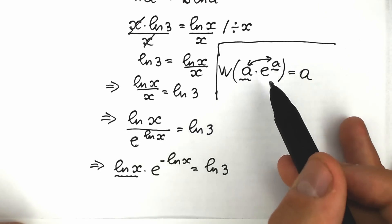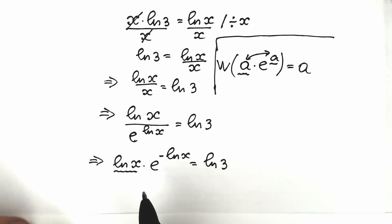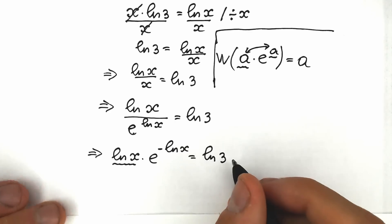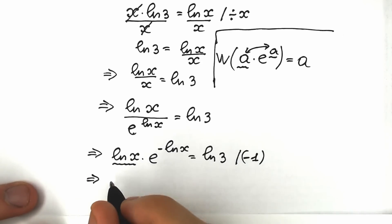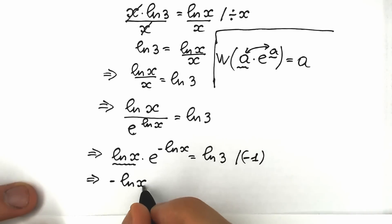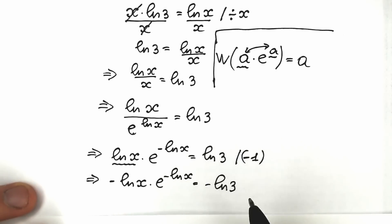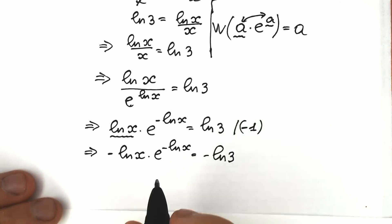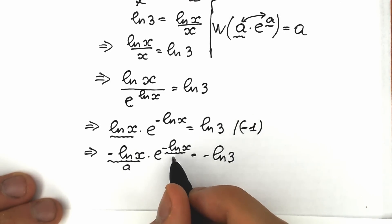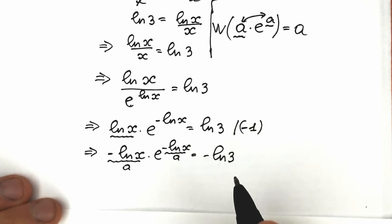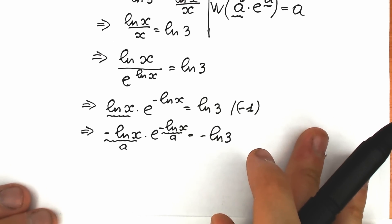According to the Lambert W function definition, we need a and a — the same expression. So let's multiply both sides by minus 1. As a result we have minus natural log x times e to the power minus natural log x equal to minus natural log 3. Now minus natural log x is our a, and we have the same expression as the exponent — this is our Lambert W function case.